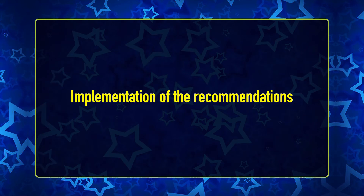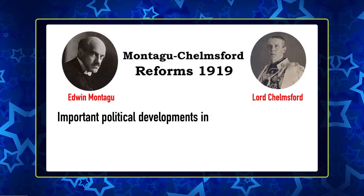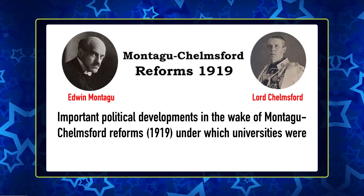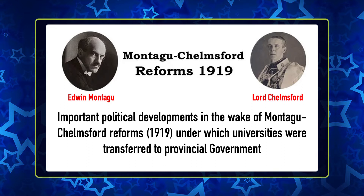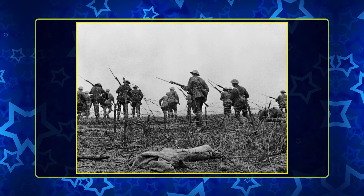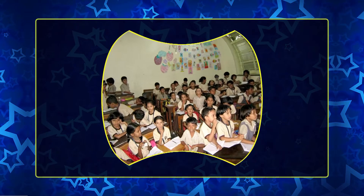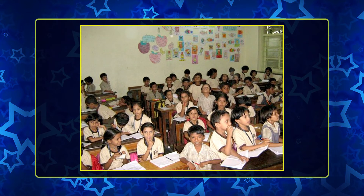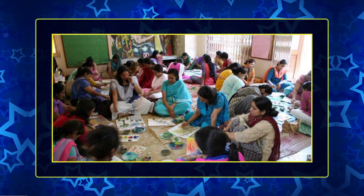Regarding implementation of the recommendations, there were important political developments in the wake of the Montague-Chelmsford Reforms of 1919, under which universities were transferred to provincial governments. Several problems arising from the consequences of the First World War also had to be given priority. Hence, the recommendations could not be put to immediate implementation. As the demand for compulsory primary education was increasing, many provinces passed compulsory education acts. The number of schools imparting secondary education increased, English remained as the medium of instruction, vocational courses and teacher training colleges were started, and several universities came into being.